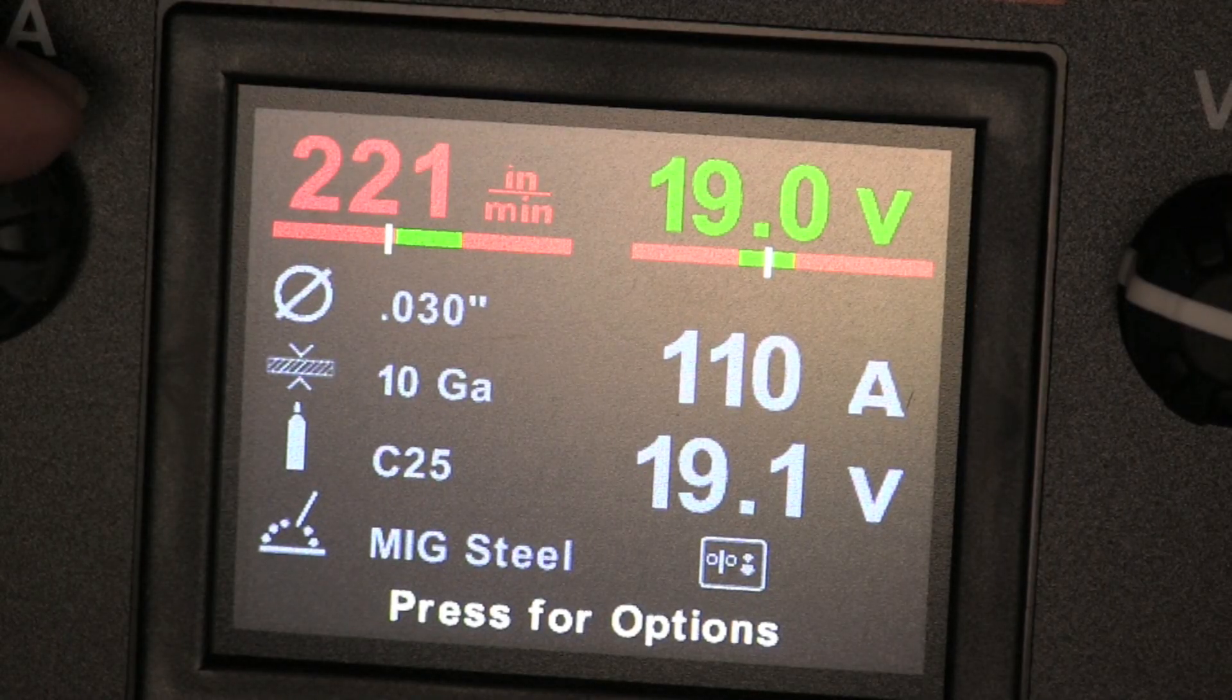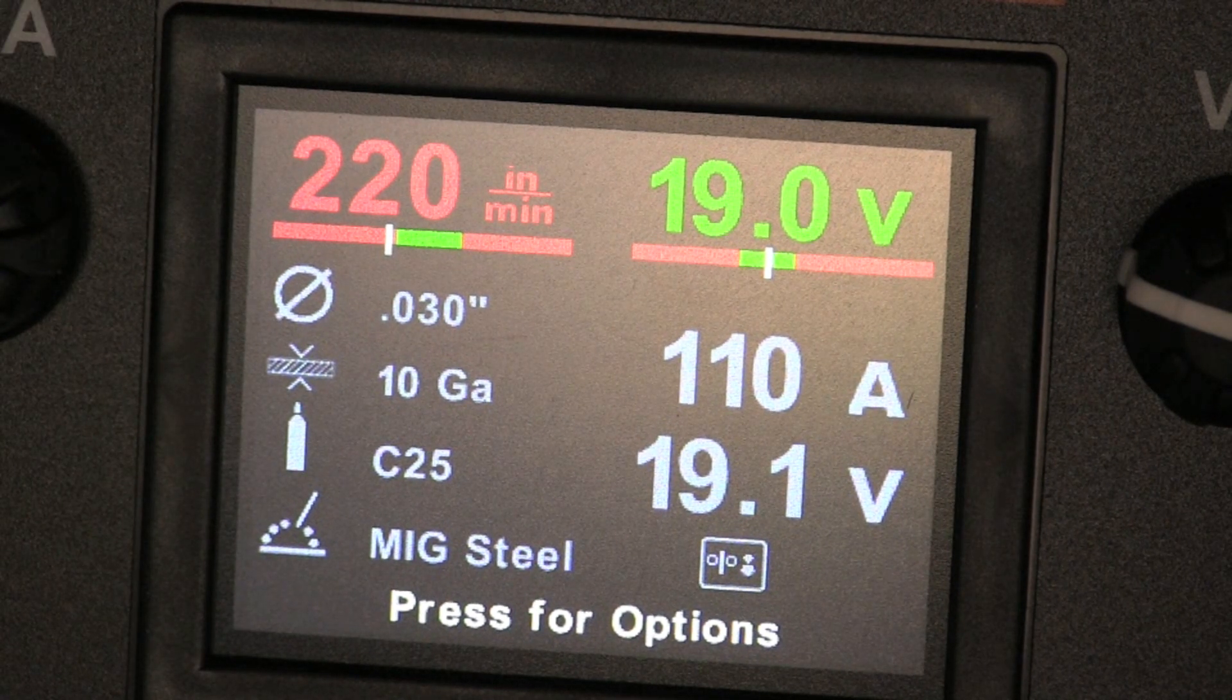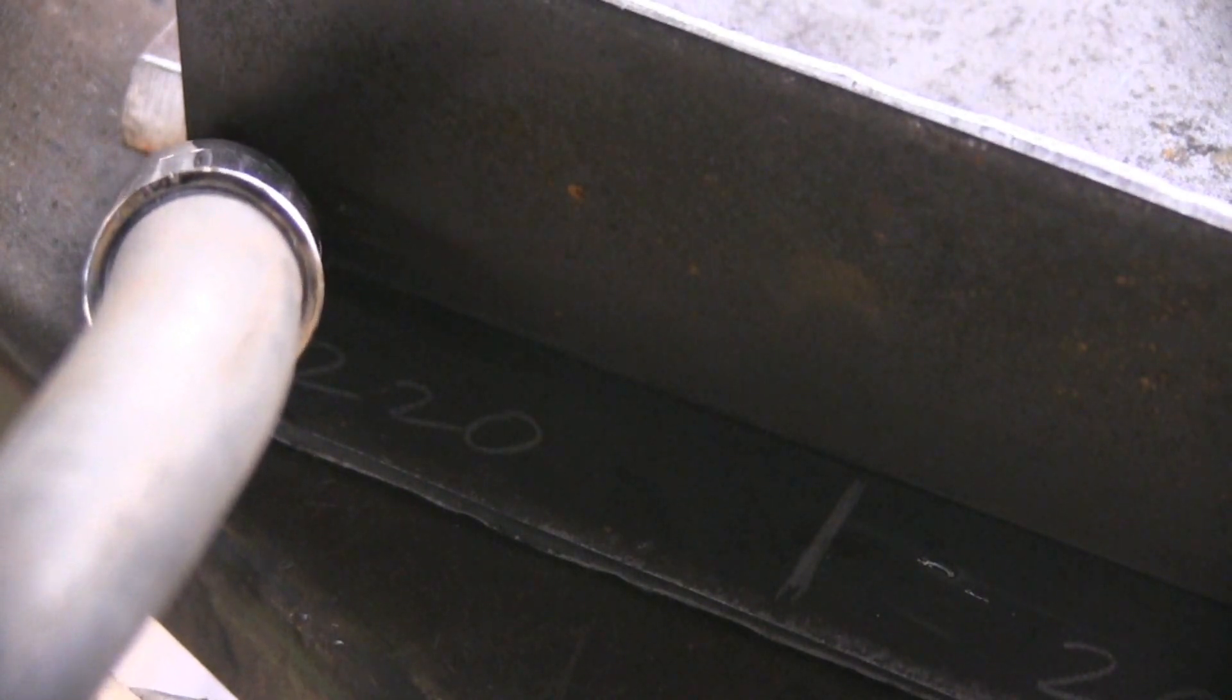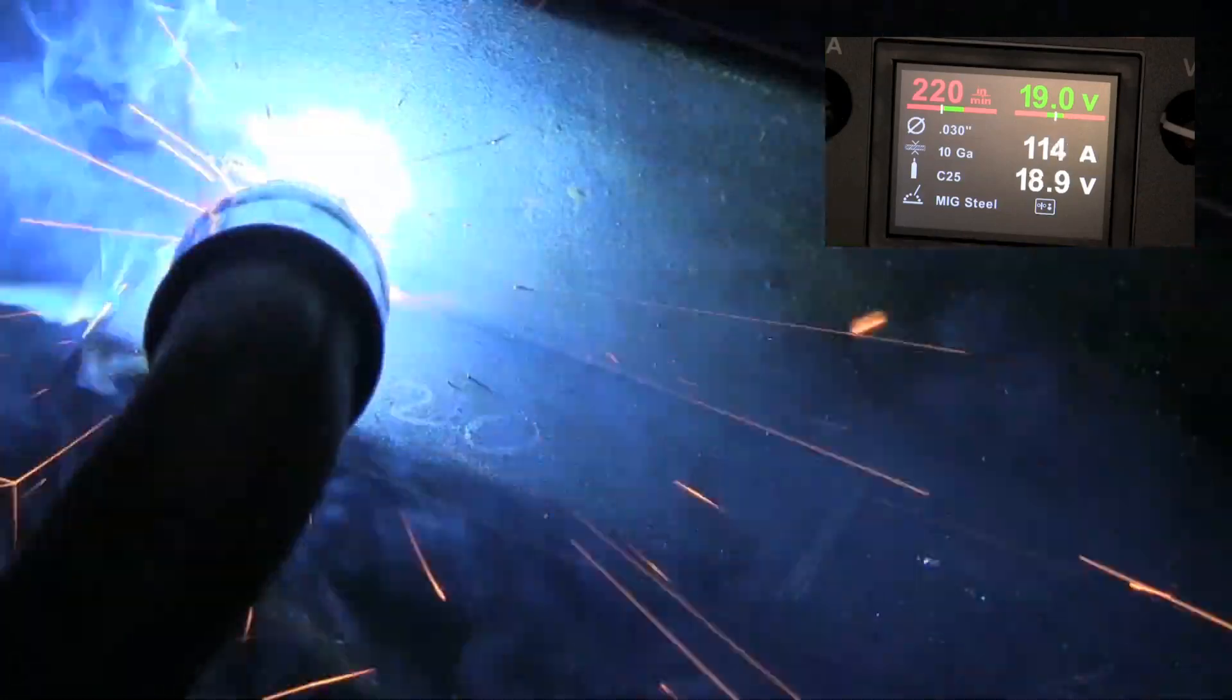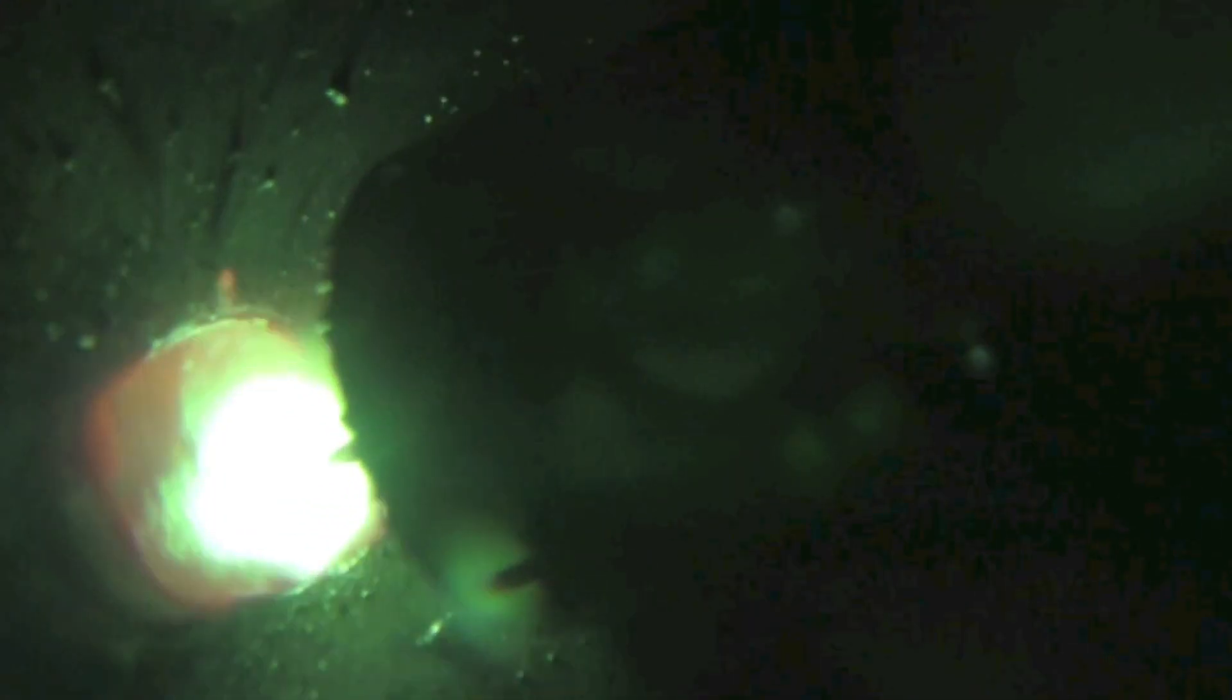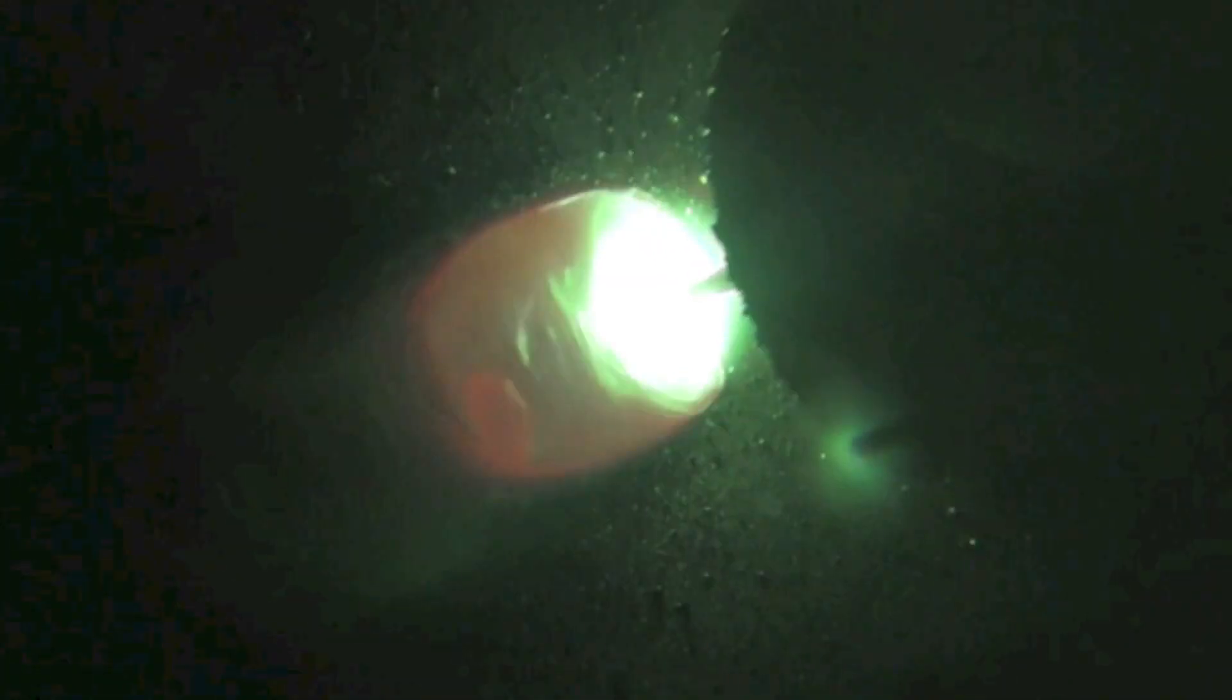Now we're going to drop it down to 220. You notice the 220 turned red just then. That's because the machine is basically telling me that that's a little out of scope for 19 volts using 030 wire. But we're going to do it anyway. Now my amperage dropped down into the 115 range or so, 115 to 120. Definite change in the sound.